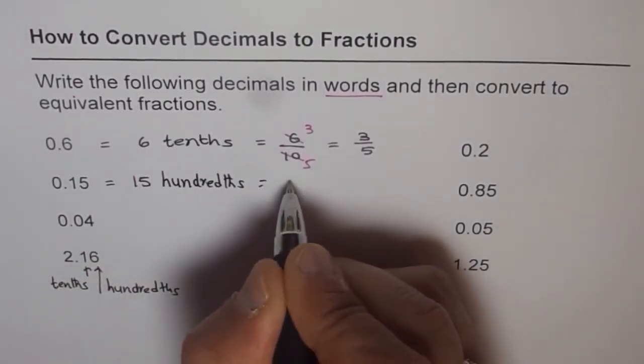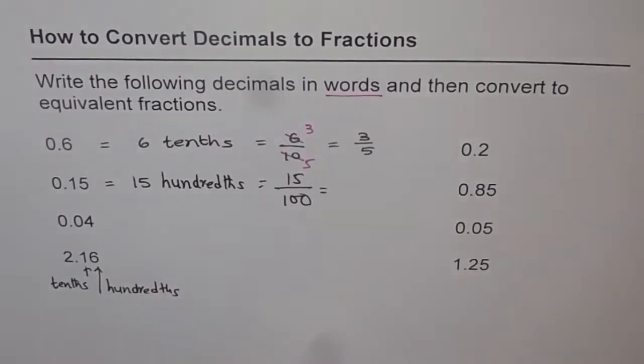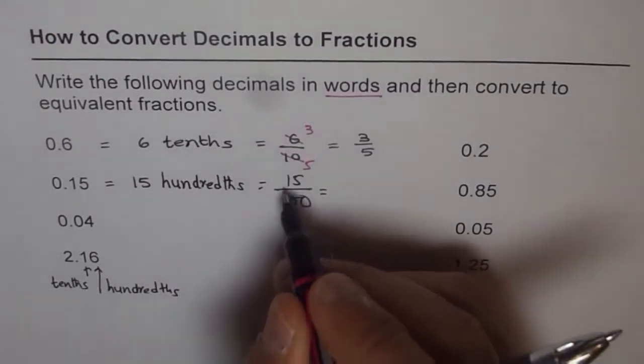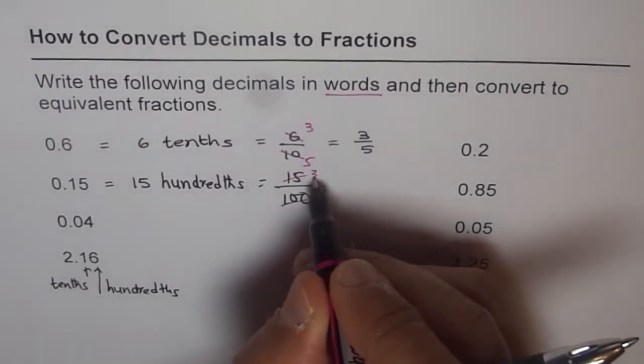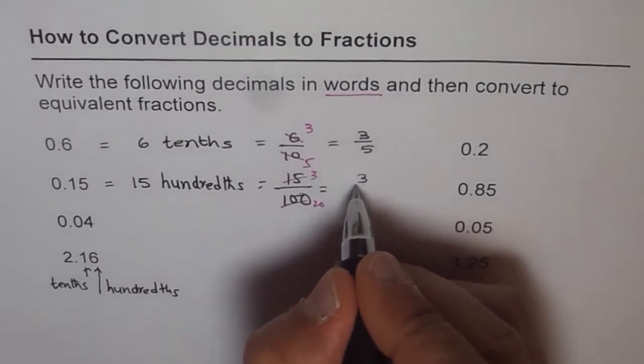So I could write this as 15 over 100. Now it's a question of simplifying. We can divide both by 5, so you get 3 over 20. So we get our answer as 3 over 20.